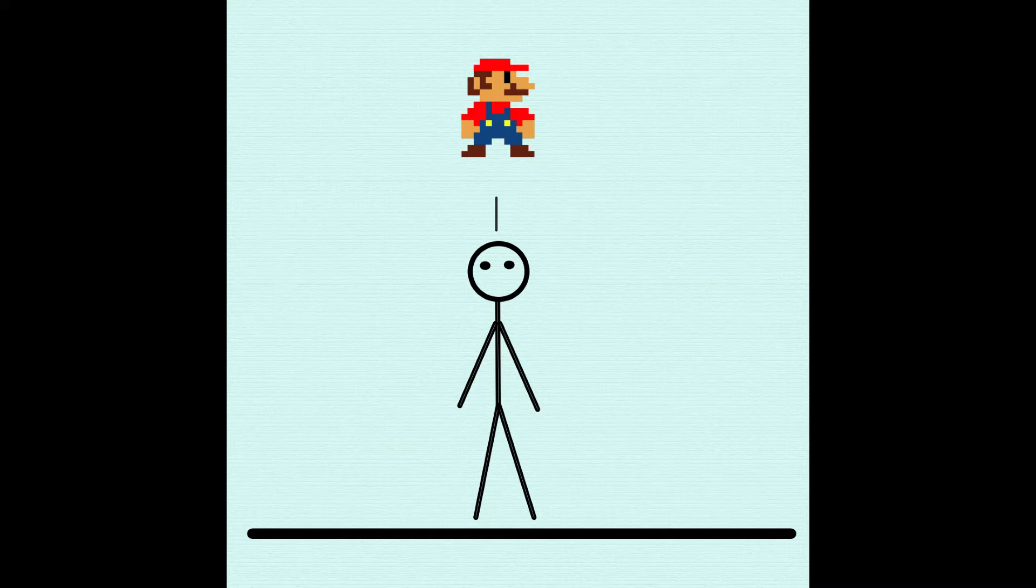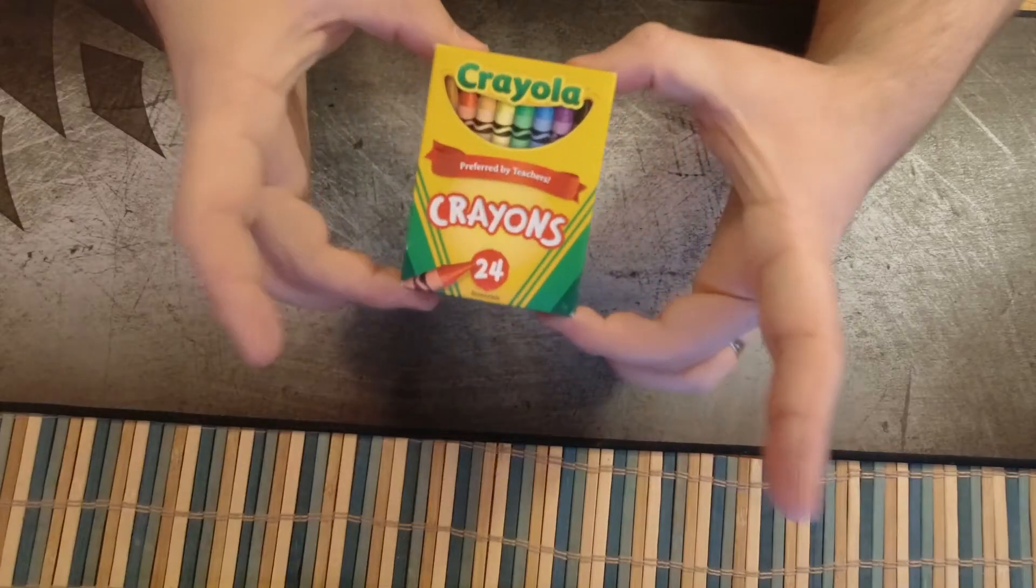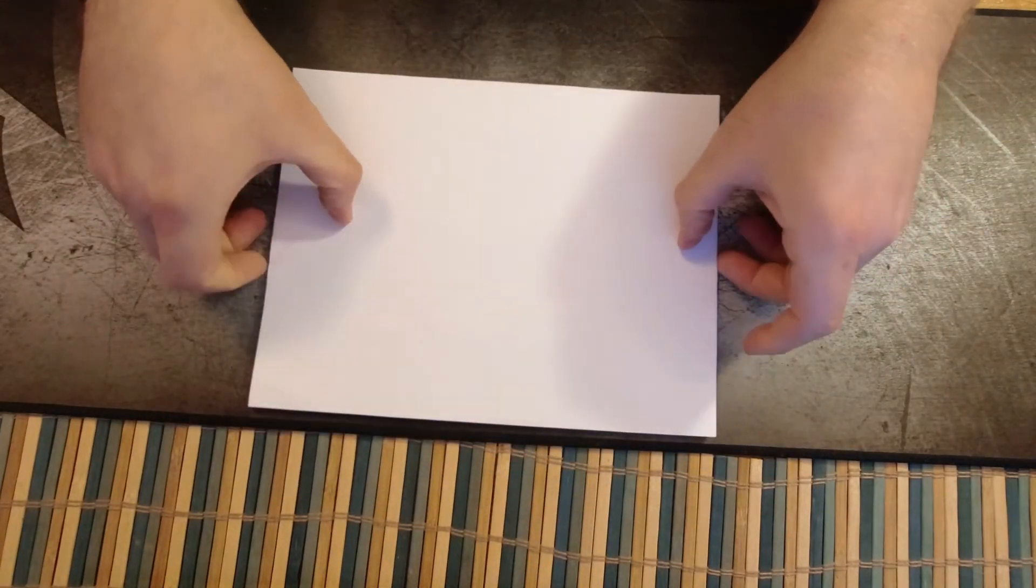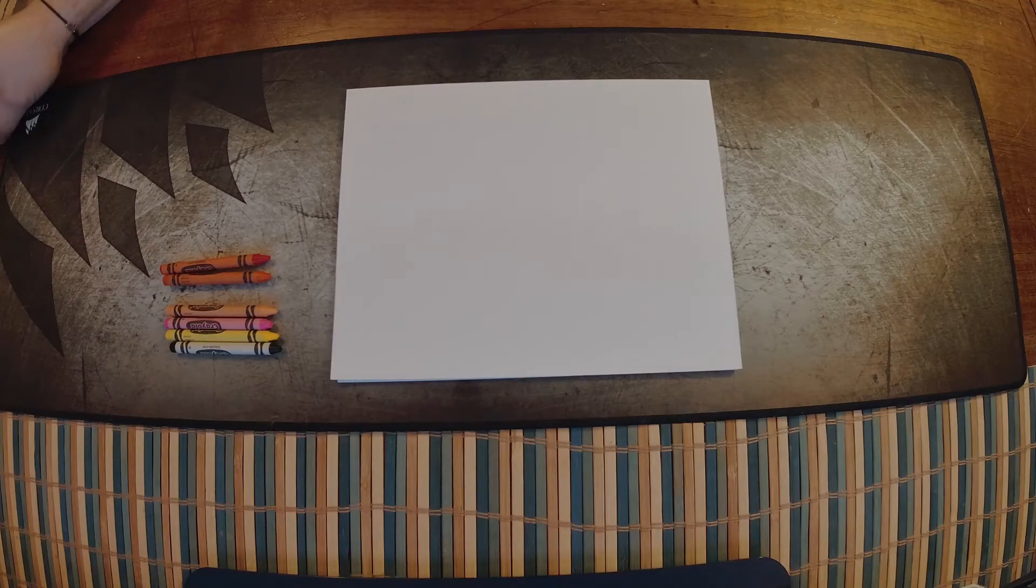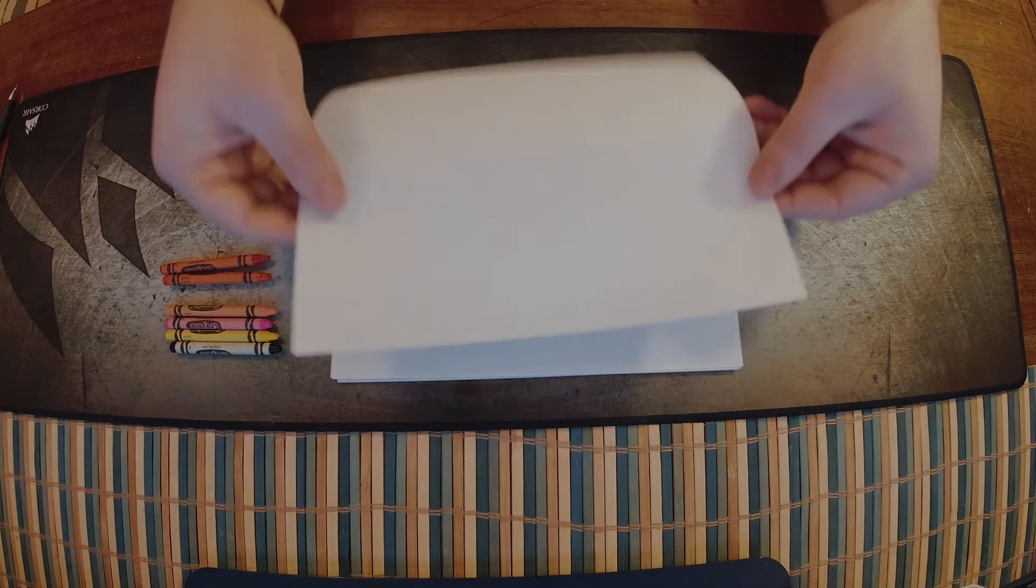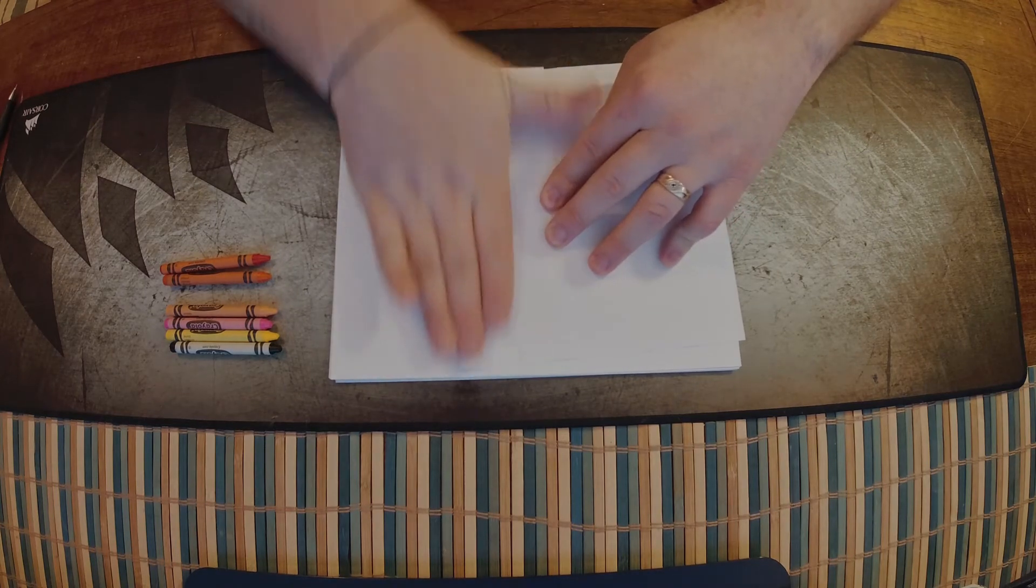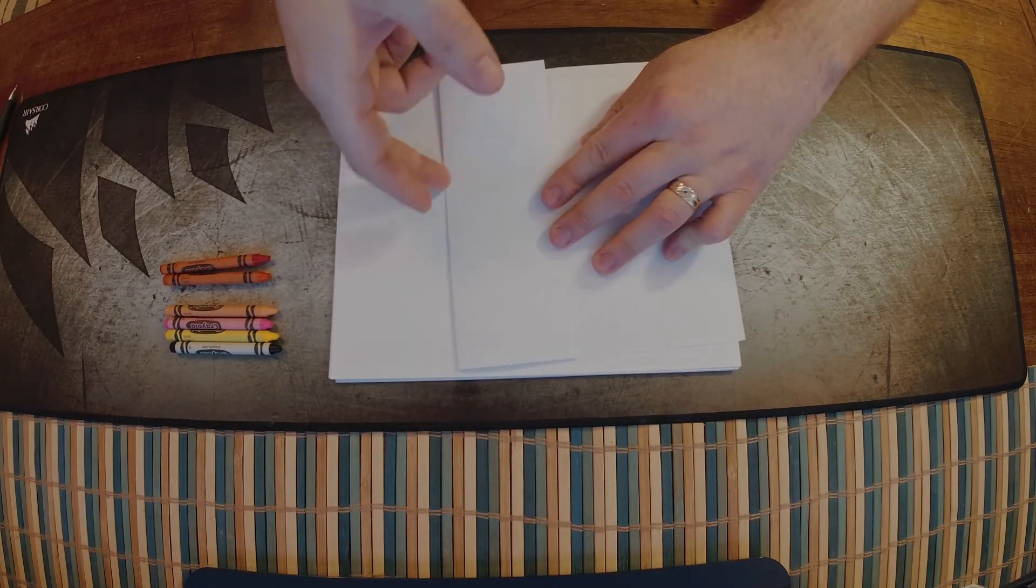So what we're going to need for this is something to draw with, of course, and some paper. And we'll need a straightedge of some kind. If you have a ruler, that's great. If you have a piece of cardboard or anything straight. And if not, you can even just take some paper and fold it like I'm going to do.